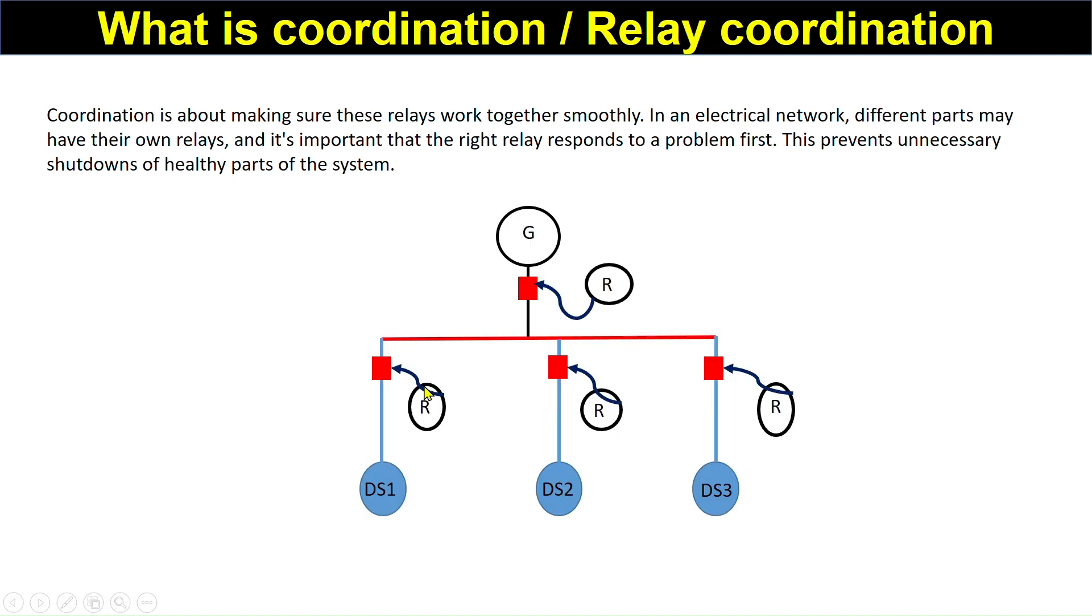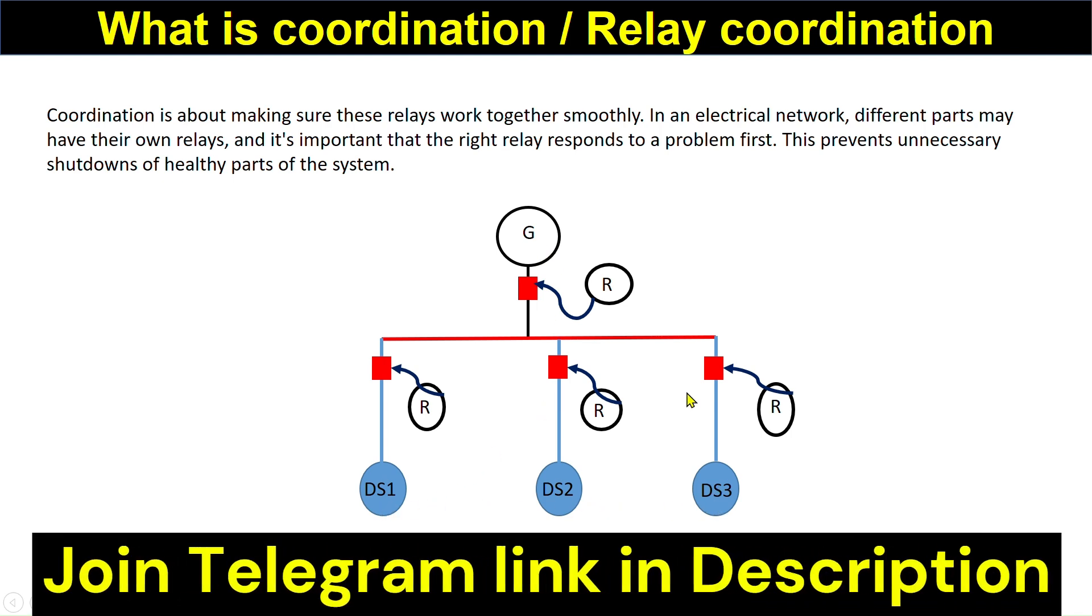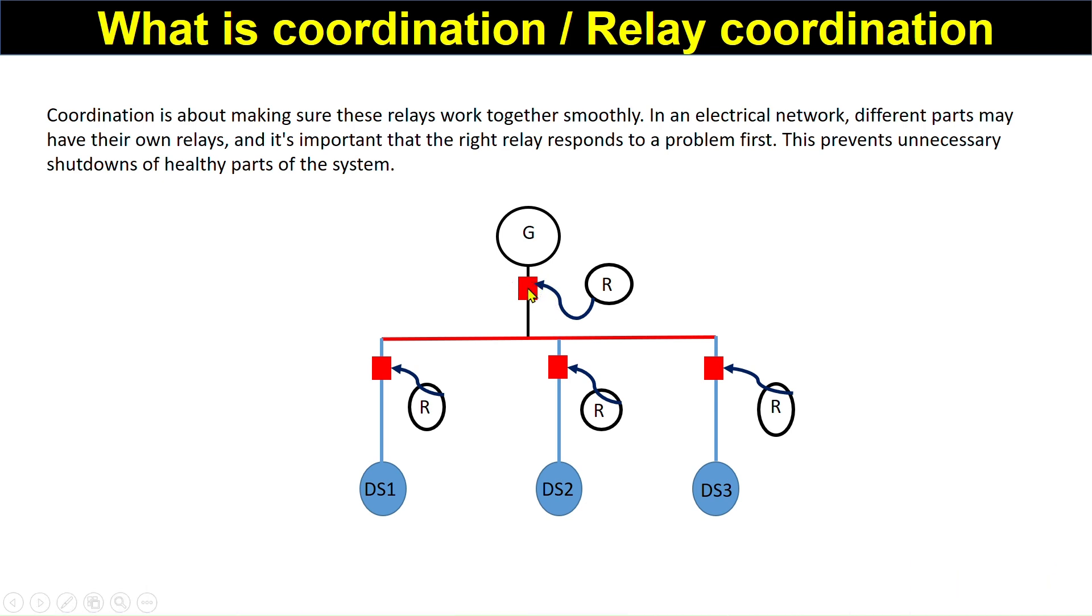This is a simple grid here. This is the grid and these are the distribution transformers connected to the grid. Each branch has its own circuit breaker and this is controlled by this relay. Similarly, this distribution has its own circuit breaker and relay. First distribution, second distribution, and third distribution.